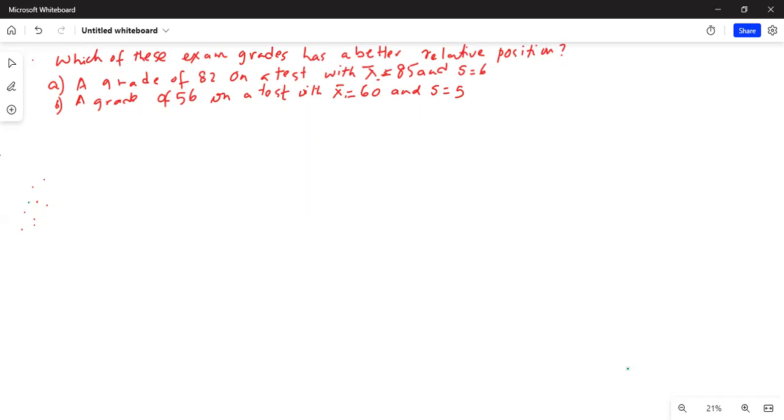Which of these grades has a better relative position? Part A: a grade of 82 on a test with x̄ = 85 and sample standard deviation s = 6.